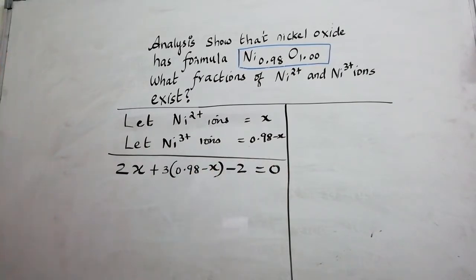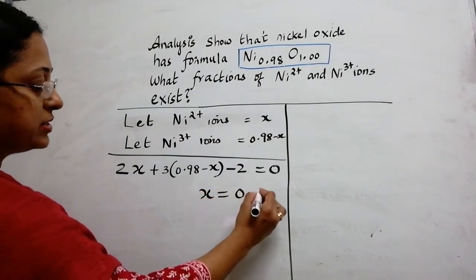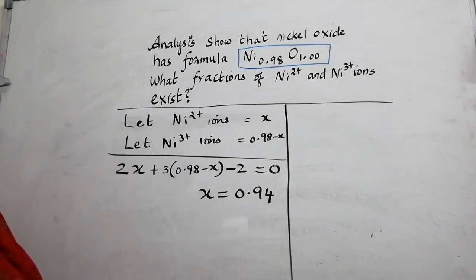So like this you can develop a linear equation. Now what is the next step? I need to find out what is X which when we solve I will be getting 0.94.